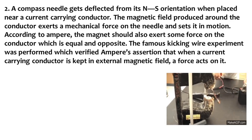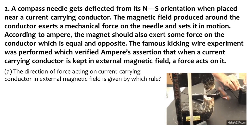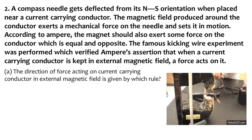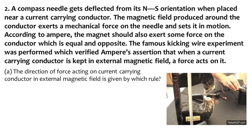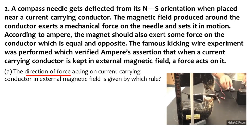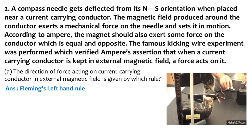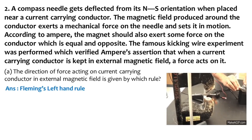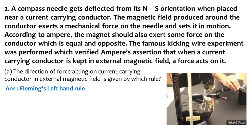Question A: the direction of force acting on a current-carrying conductor in an external magnetic field is given by which rule? We have three rules to study in this chapter, and the rule which gives you the direction of force is Fleming's left hand rule. Fleming's right hand rule gives you the direction of induced current, and Fleming's left hand rule gives you the direction of the force acting on the conductor.